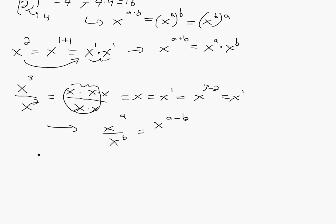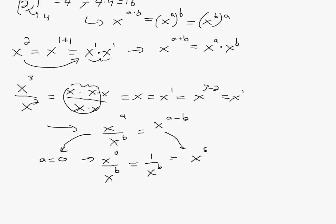Now let's say you take that rule and let a equal 0. Then you have x to the 0 over x to the b, and by definition this is just 1 over x to the b. If you apply the subtraction rule, you get x to the 0 minus b, which equals x to the negative b. So from this we get another generalization: x to the negative b equals 1 over x to the b.